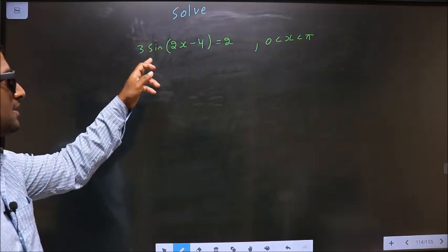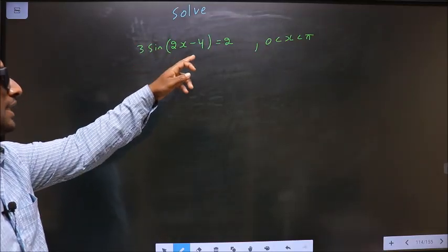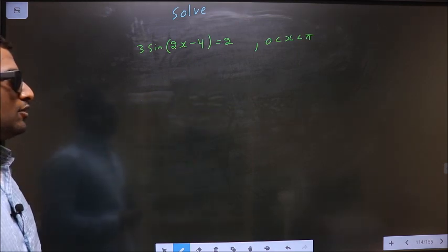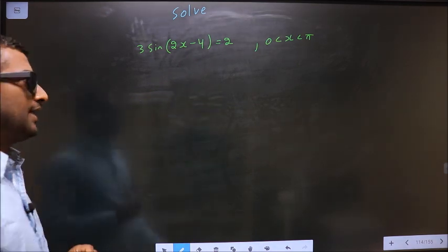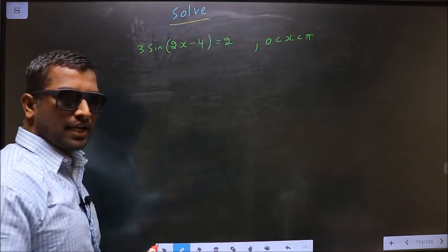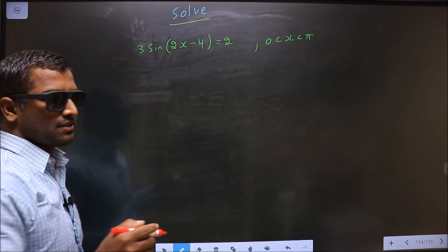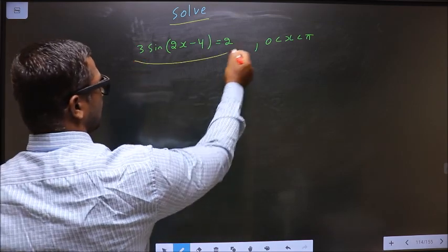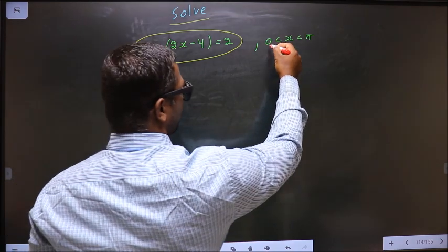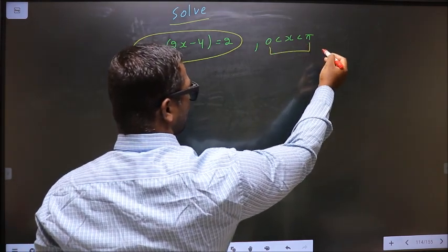Solve 3 sin(2x - 4) = 2 where x lies in the interval 0 to π. Here they told you to solve, so you should find the values for x satisfying this equation and it should lie in the interval 0 to π.